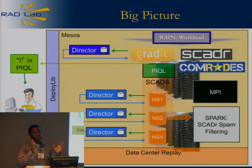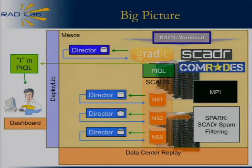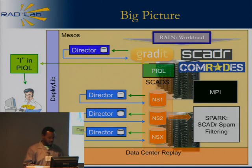In the big picture diagram, RAINN is the piece at the top in blue, and it's going to be generating the workload directed towards the undergrad apps.